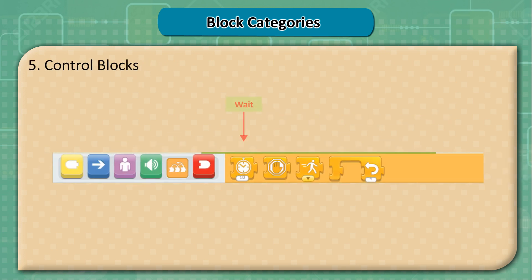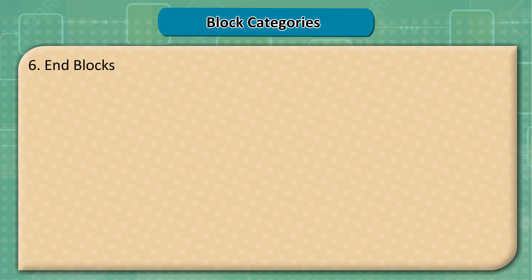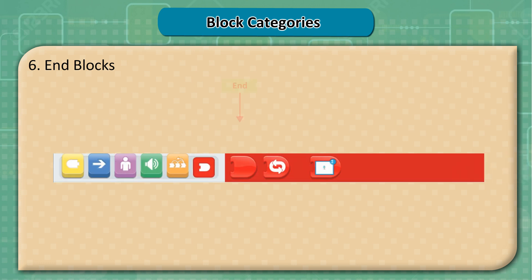Control blocks include: Wait, Set speed, Stop, and Repeat. End blocks include: End, Go to page, and Repeat forever.